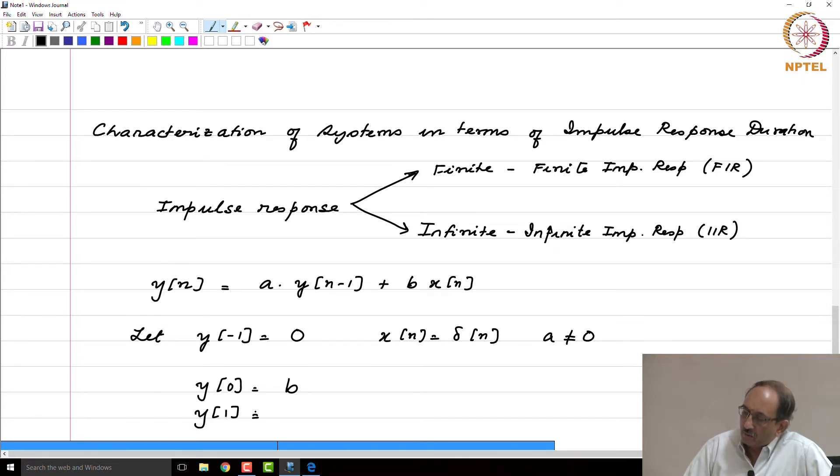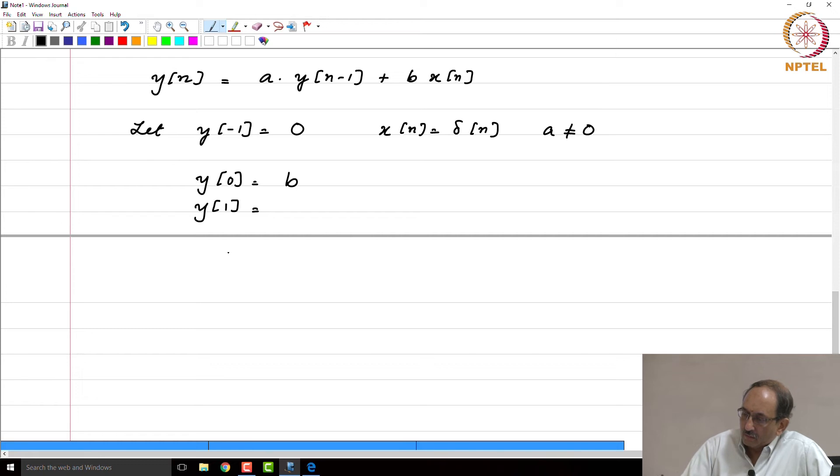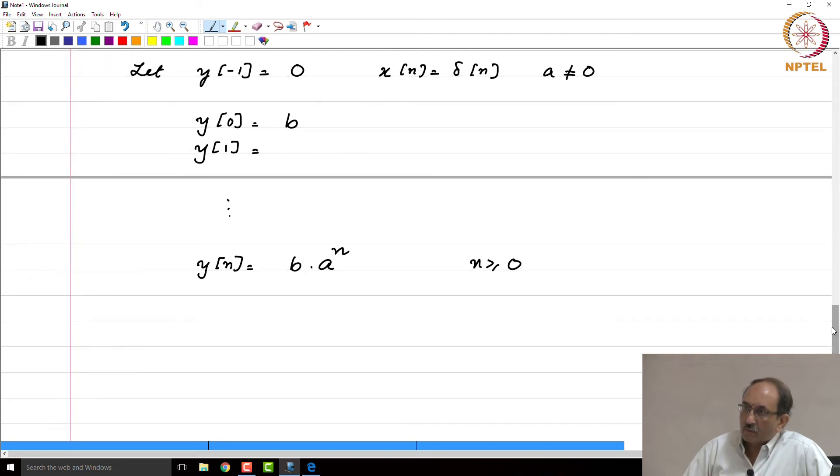Similarly, you can find out what y(1) is. You can recursively evaluate this difference equation and quickly see what the pattern is. If you did this, you will be able to see that y(n) = B*Aⁿ for n ≥ 0.